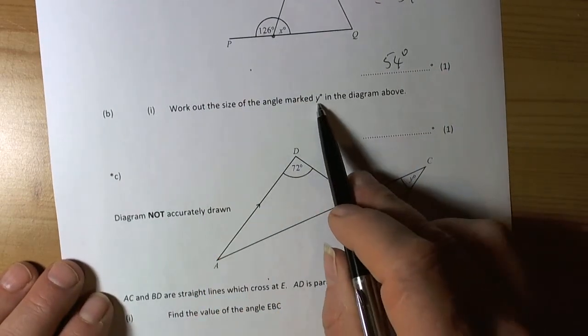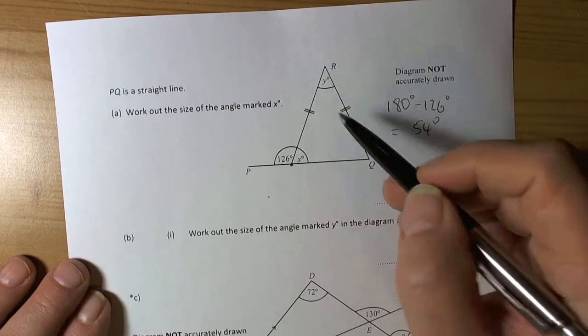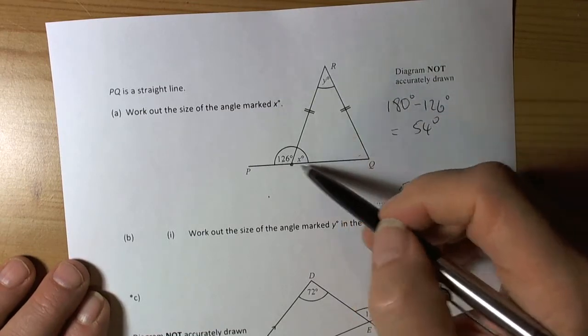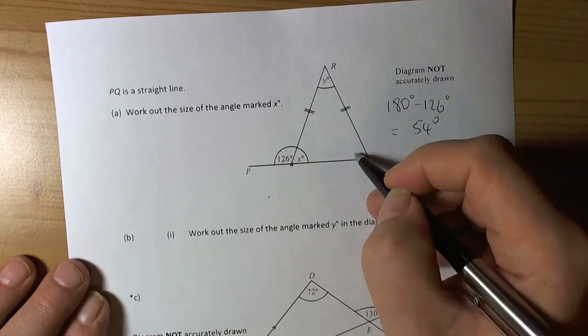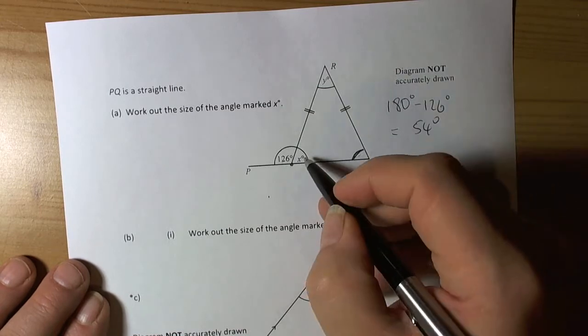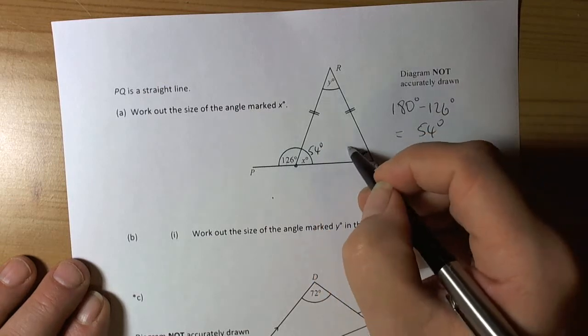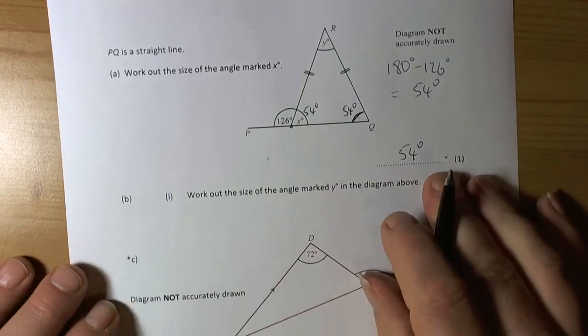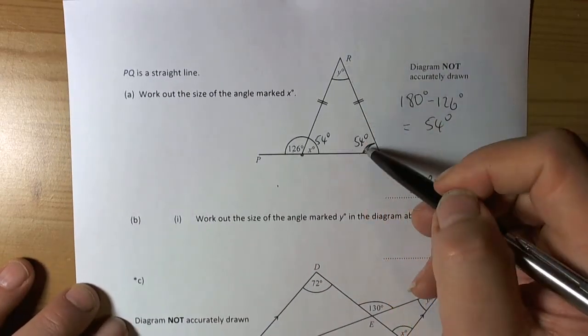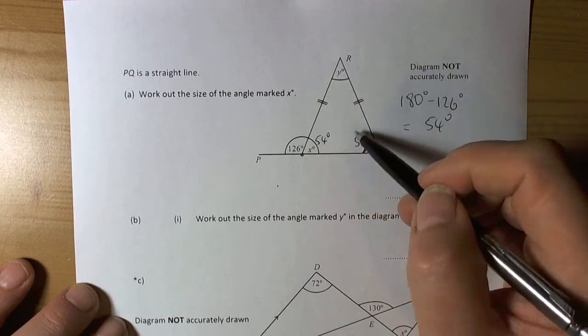Work out the size of the angle marked Y. Well, again, we look at this picture and we can see when we break it up, there is an isosceles triangle. Now, we must remember that the base angles of an isosceles triangle, so we knew this was 54 degrees, and this is also 54 degrees. And we recognise that in a triangle, angles add up to 180 degrees.